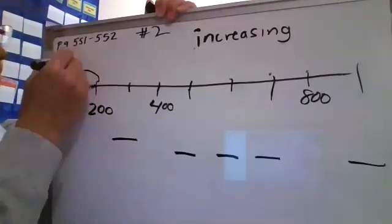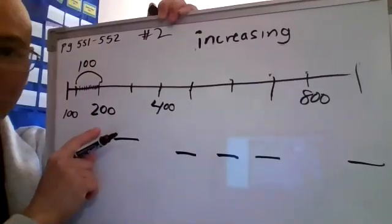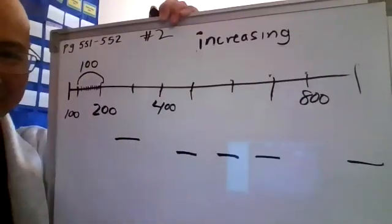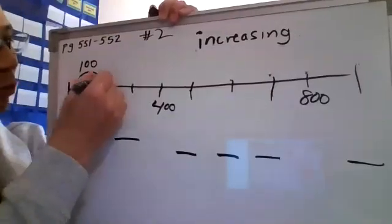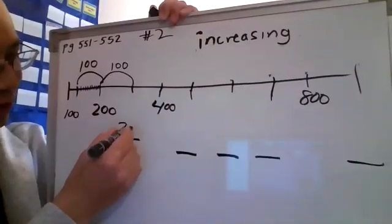100. 100 plus 100 is 200. 200 plus 100 makes 300.